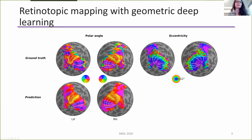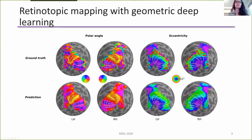Now we have the predicted polar angle map and the predicted eccentricity map for the same participant. We overlaid the solid white grid and the dashed white grid at the same position. We can see that our model was able to predict the iso-polar angle lines matching the ground truth, and more generally, our model was able to predict the main features of the polar angle maps and eccentricity maps.